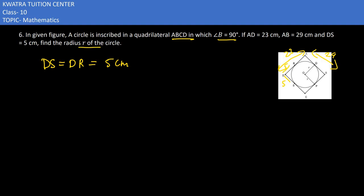Now we have the radius left here. For AR, we know AD is 23 cm. To find AR, we subtract DR from AD. So 23 minus 5 equals 18 cm.